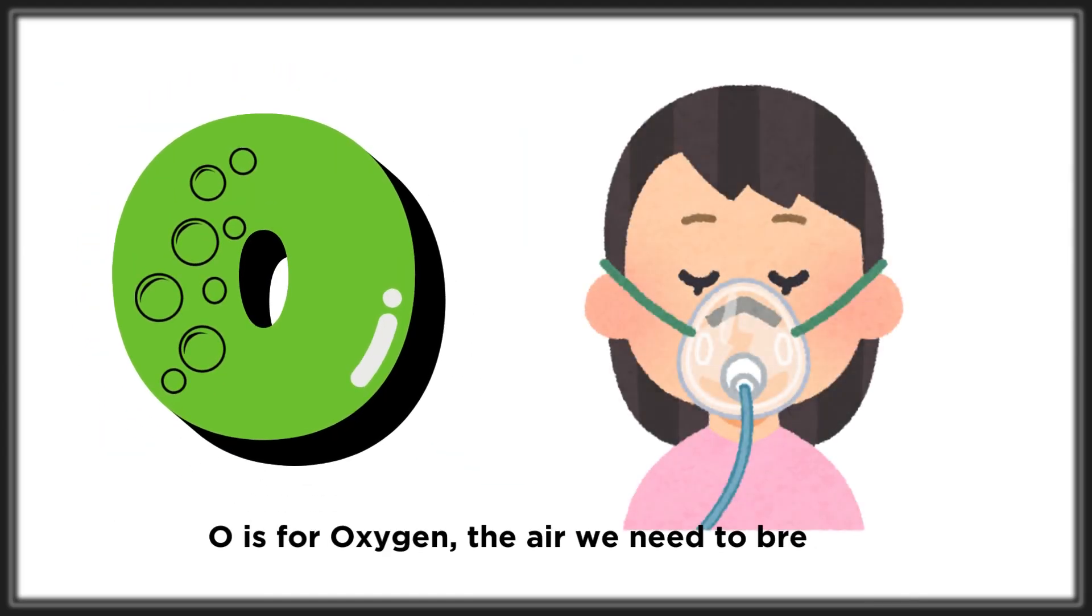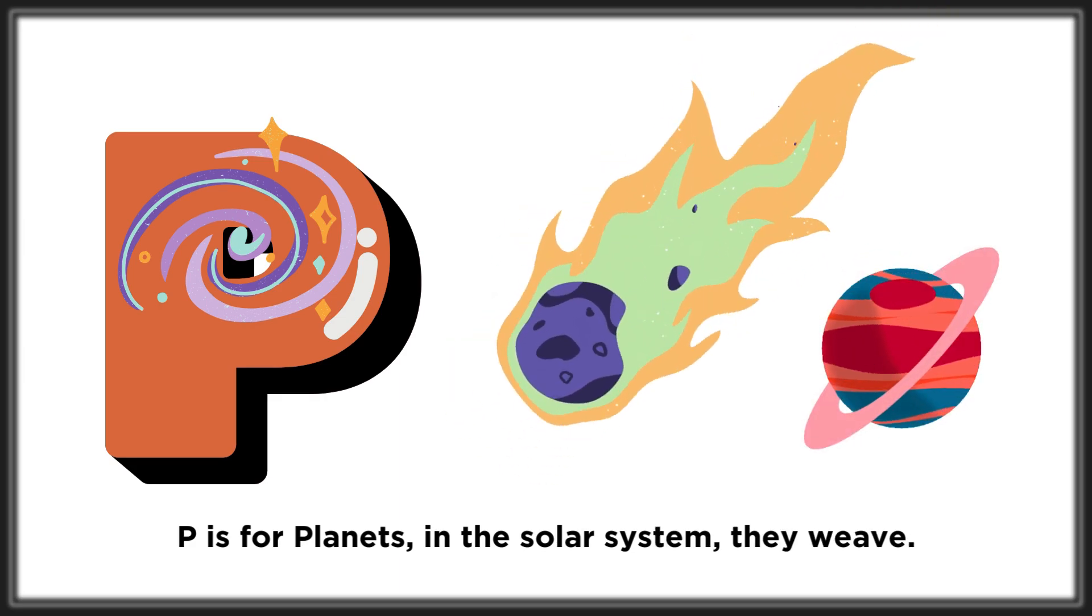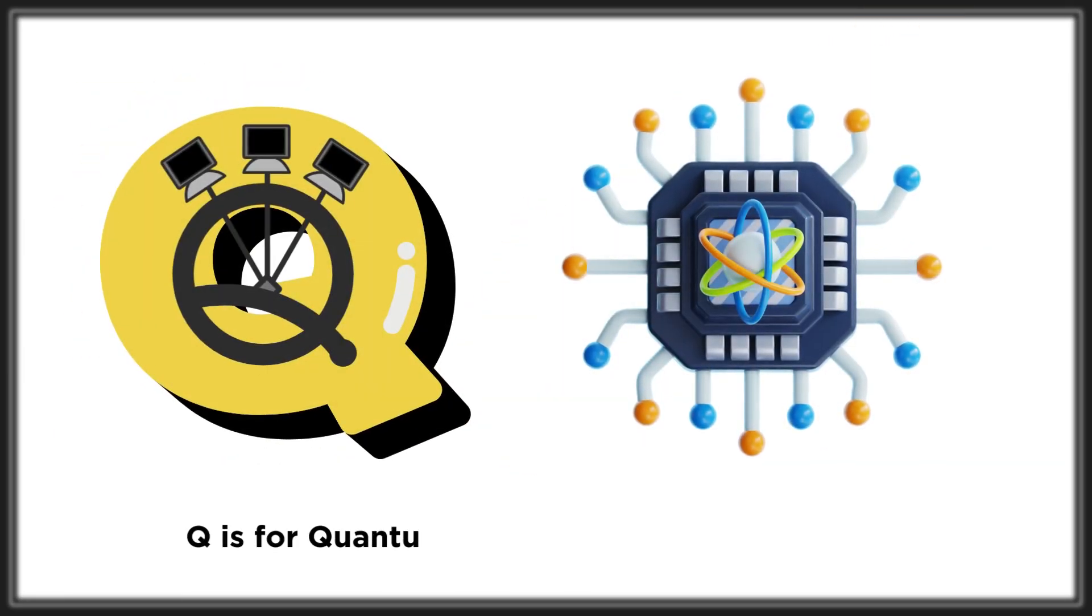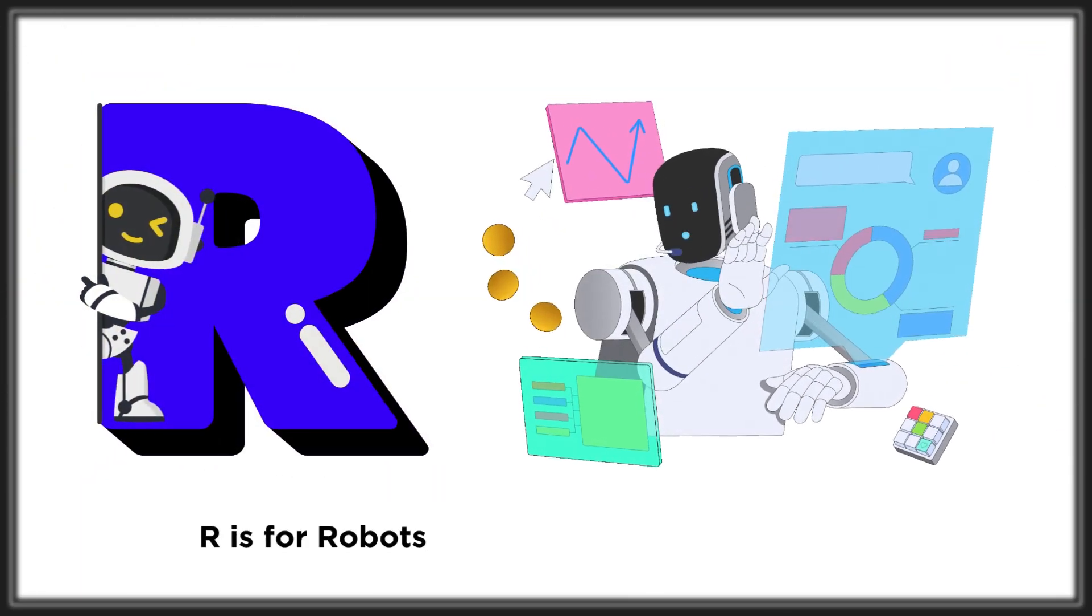the air we need to breathe. P is for planets in the solar system, they weave. Q is for quantum, science small but oh so vast. R is for robots,